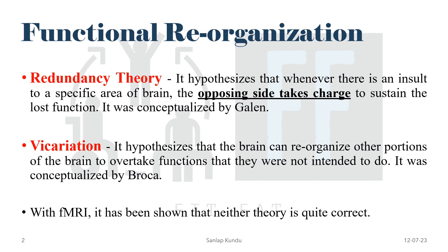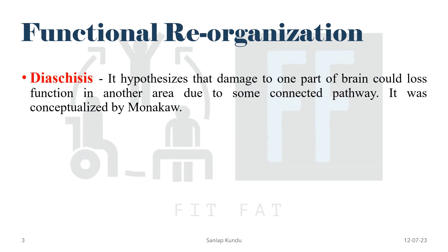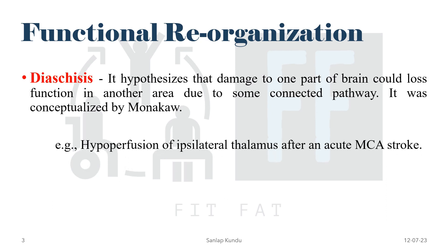The third theory is diaschisis, conceptualized by Monaco. This theory hypothesizes that damage to one part of the brain could cause loss of function in another area due to connected pathways. An example is hypoperfusion of the ipsilateral thalamus after an MCA stroke. The thalamus, which receives blood supply from branches of the posterior cerebral artery and posterior communicating artery, should be unaffected during an MCA ischemic stroke — yet in approximately 20% of acute MCA strokes, hypoperfusion of the ipsilateral thalamus is noted on CT perfusion imaging. This supports the diaschisis theory.